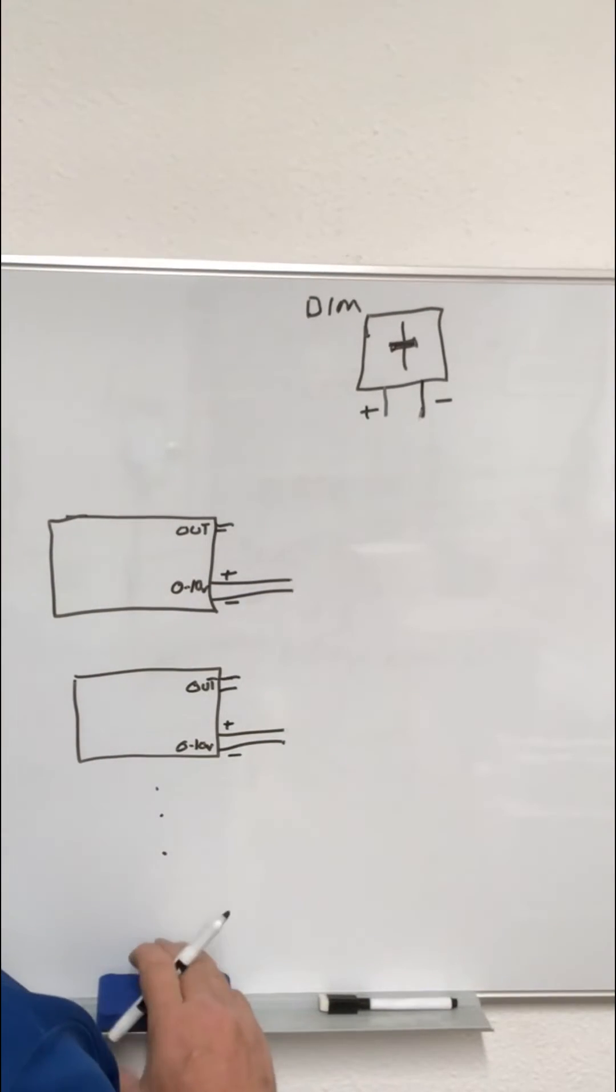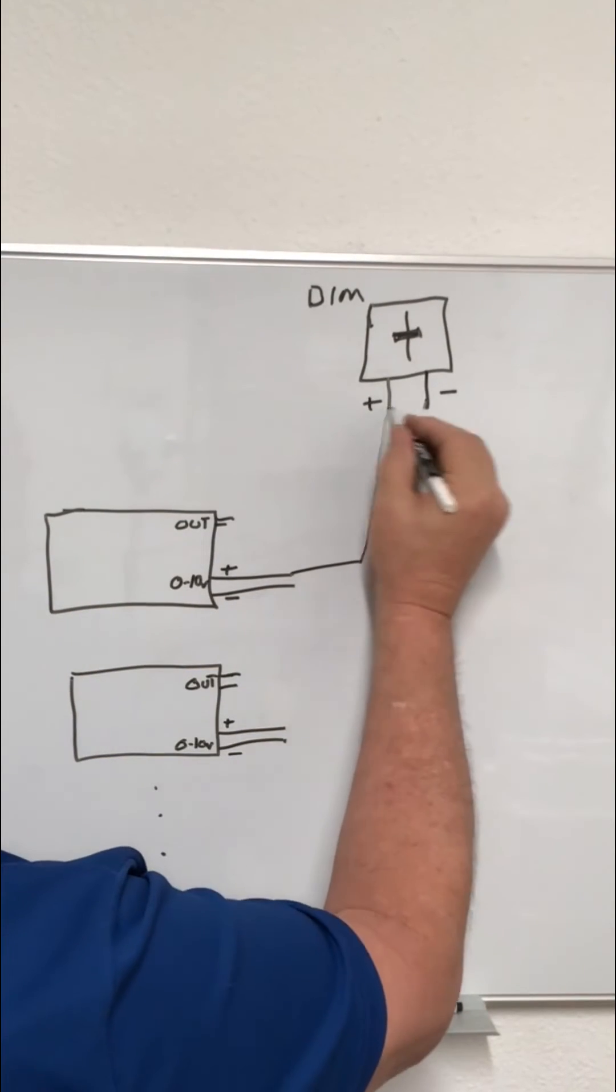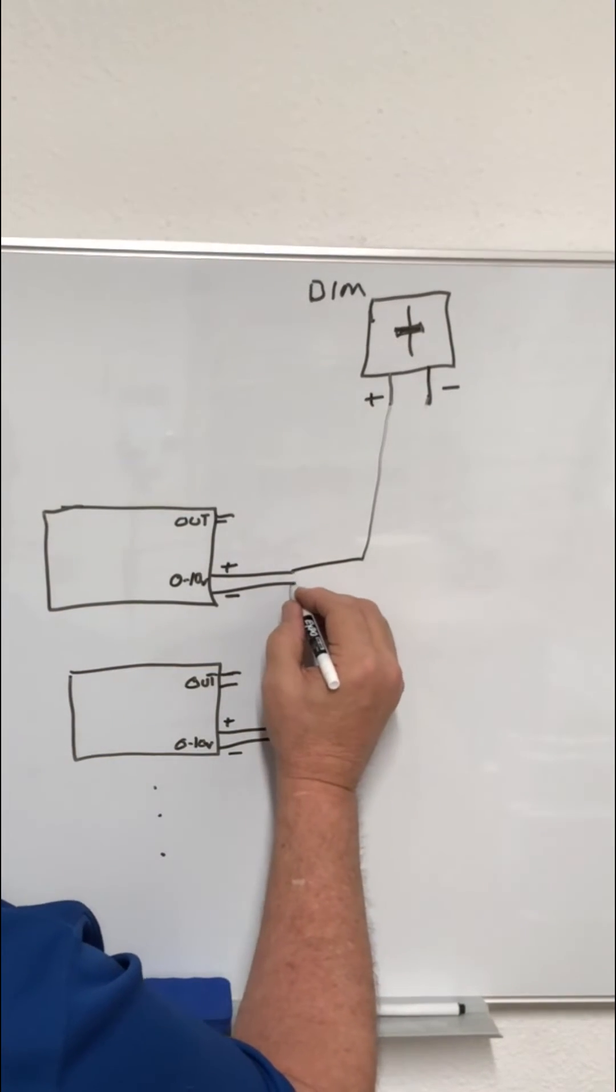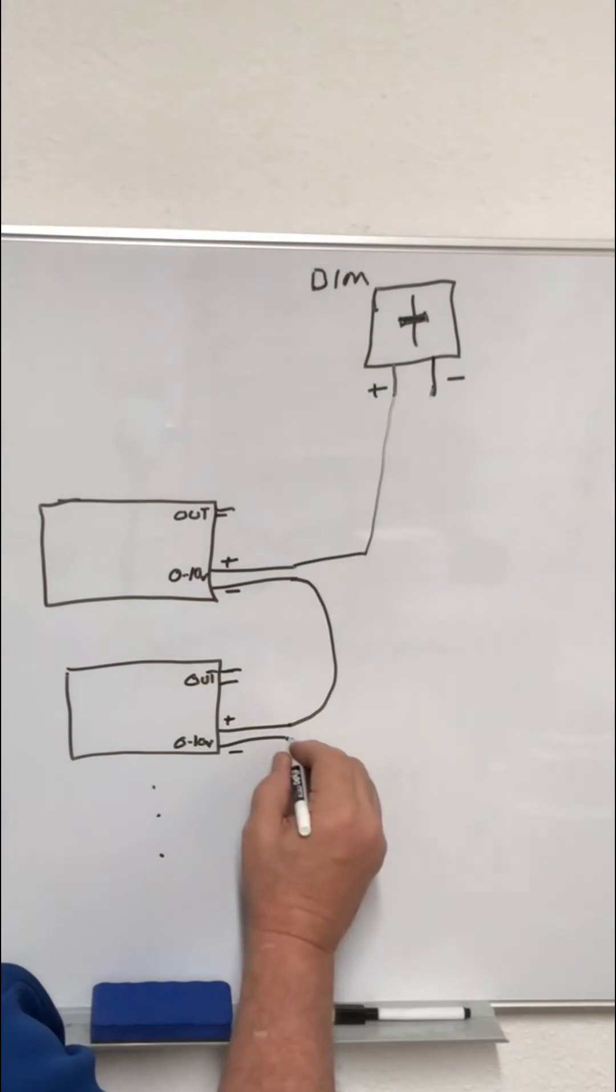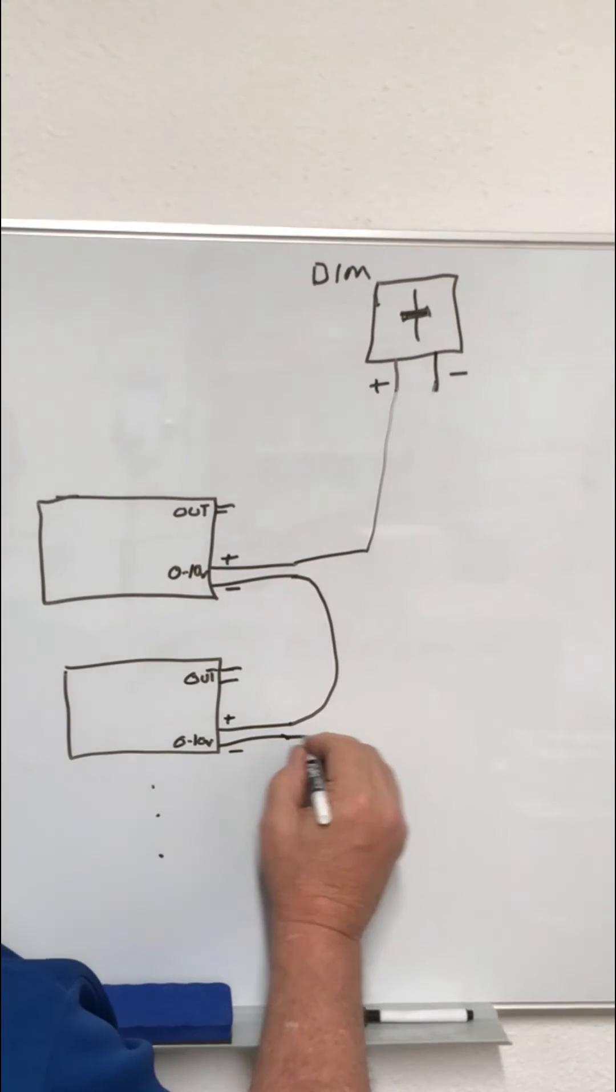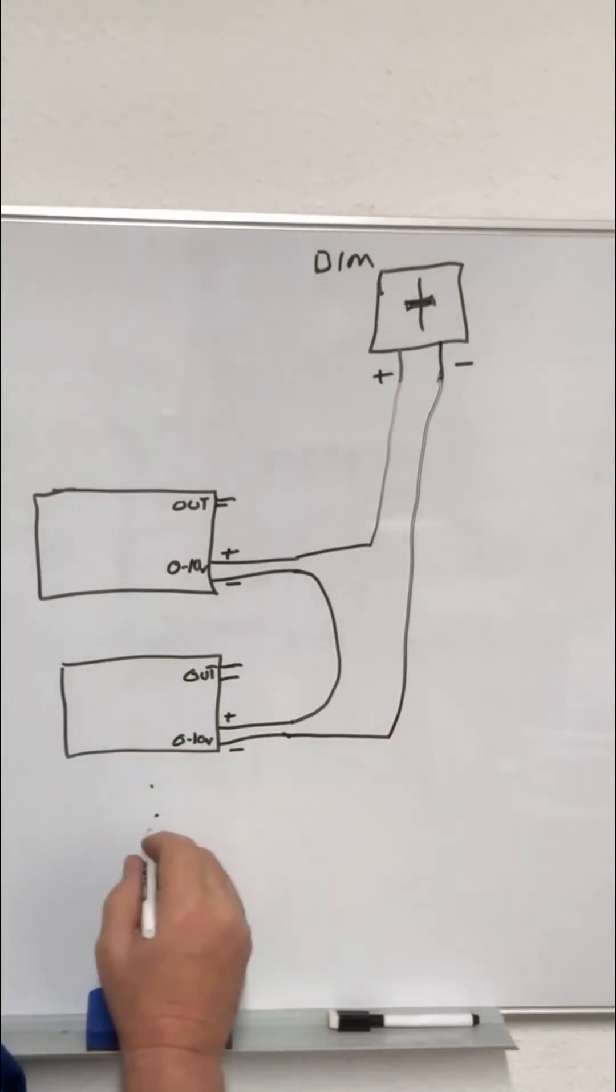...is where you'll have the positive to the dimming circuit and then the negative of one driver going to the positive of the next dimming circuit, and then the negative going back. This is considered daisy chain.